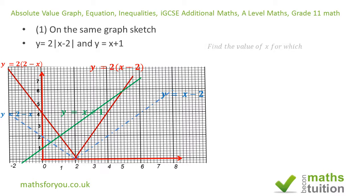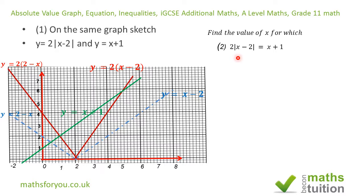For the next section, we're asked to find the value of X for which 2 times absolute value of (X minus 2) equals X plus 1. To solve this, I need to solve two separate equations. The first one is 2X minus 4 equals X plus 1.